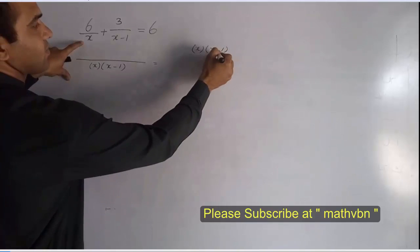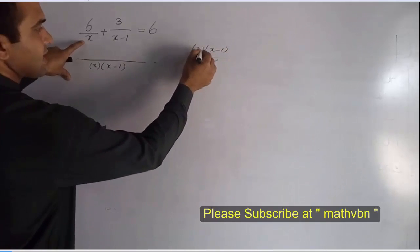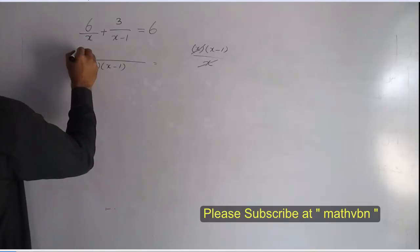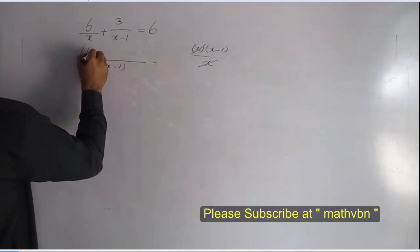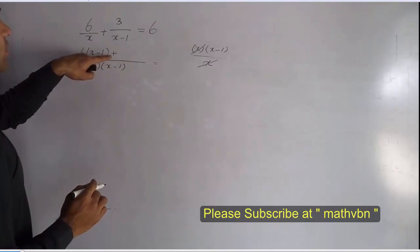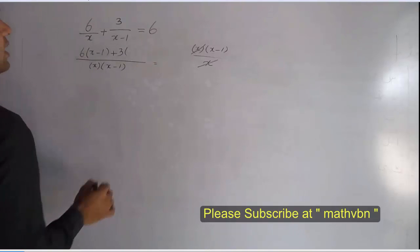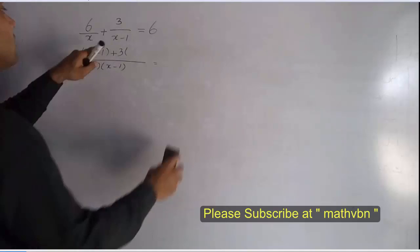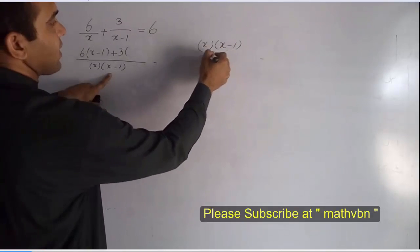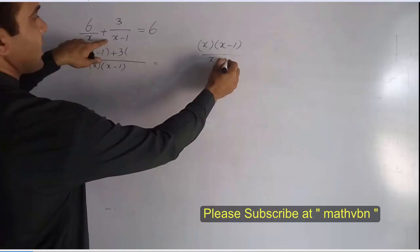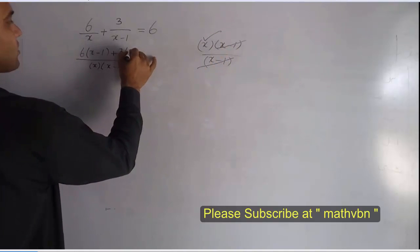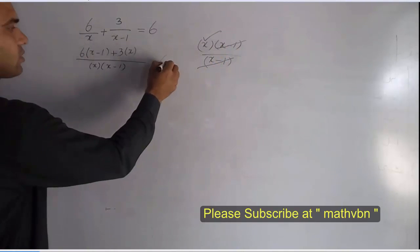Like this: x minus 1 over x — this x and this x cancel out, and x minus 1 remains. So 6 times x minus 1. Then for the next term, x times x minus 1 over x minus 1 — this cancels, and only x remains. So we write x here, and it is equal to 6 times x times x minus 1.